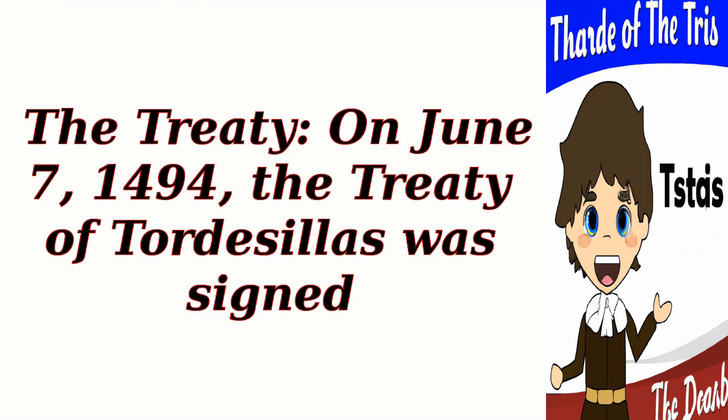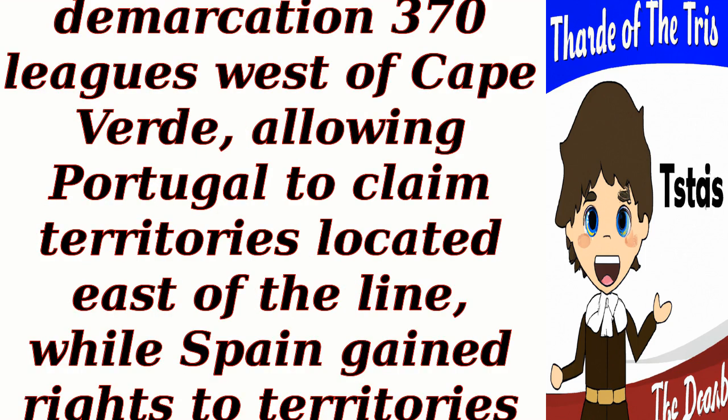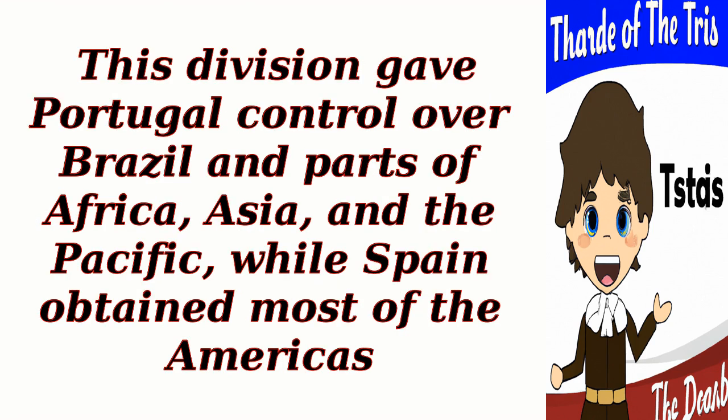On June 7, 1494, the Treaty of Tortosillas was signed. It moved the line of demarcation 370 leagues west of Cape Verde, allowing Portugal to claim territories located east of the line, while Spain gained rights to territories west of the line. This division gave Portugal control over Brazil and parts of Africa, Asia, and the Pacific, while Spain obtained most of the Americas.